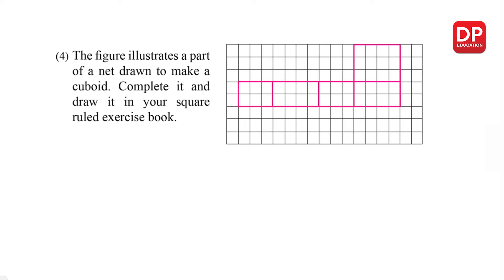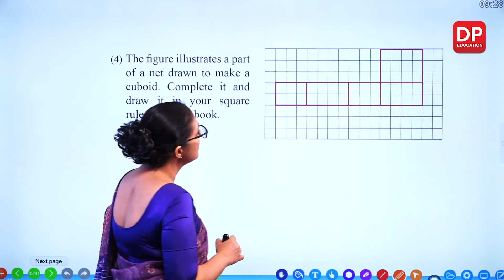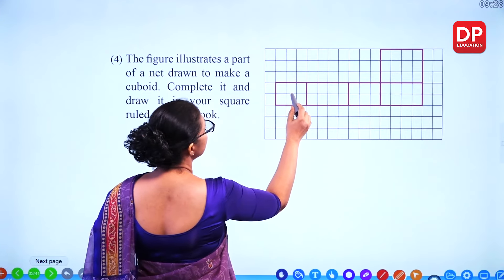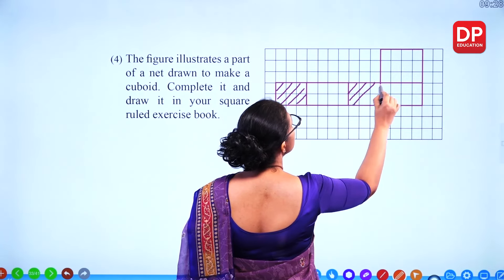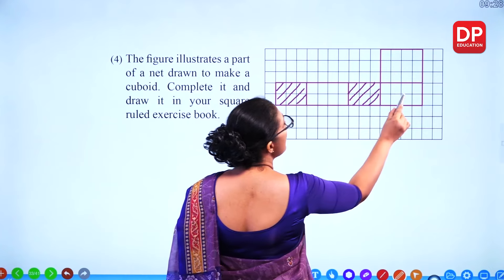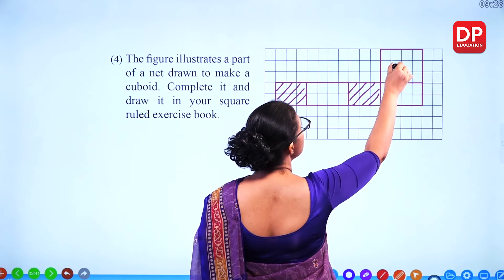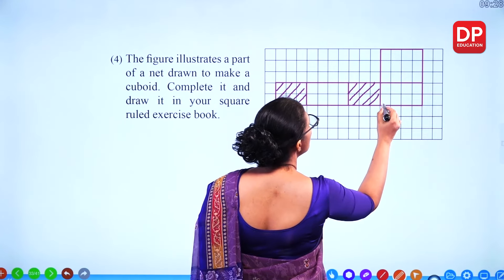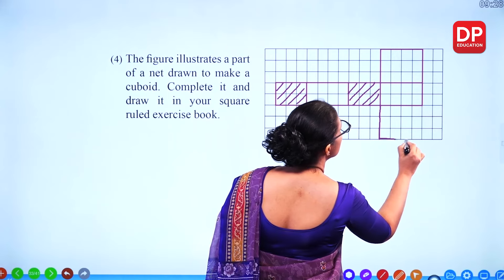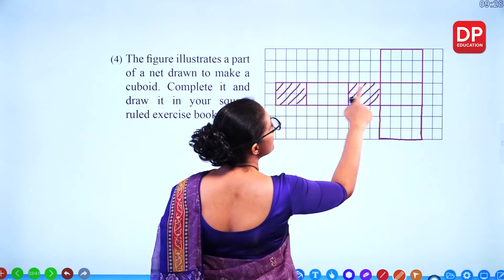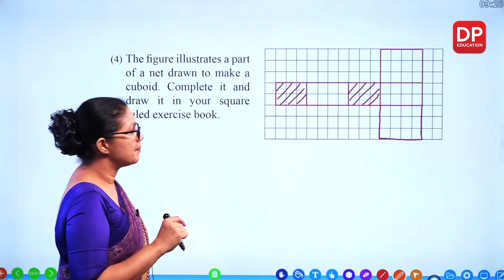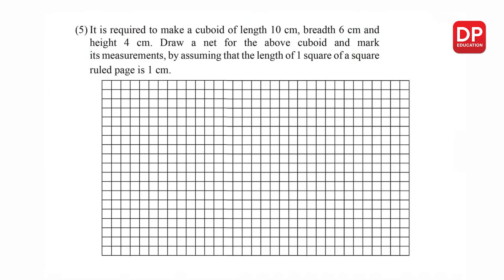The figure illustrates a part of a net drawn to make a cuboid — complete it and draw it in your square-ruled exercise book. You need two 3-by-2 rectangles on two sides, and you need to complete the remaining faces. Adding the missing rectangle completes the net with all six faces: 1, 2, 3, 4, 5, 6.